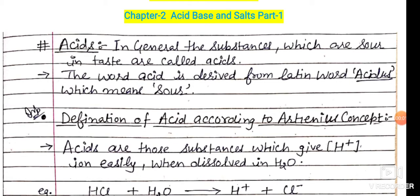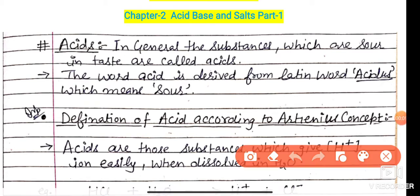Hello dear students, how are you all? I hope you all are fine. I am Rubinder Verma, your science teacher. Today we are going to start Chapter 2, that is Acid, Base and Salts of Class 10th Chemistry. This is the first part of the chapter. In this part, we will discuss about acid and its chemical properties.